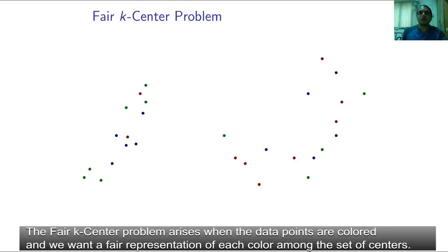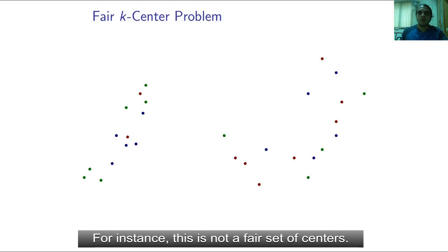The fair k-center problem arises when the data points are colored and we want a fair representation of each color among the set of centers. For instance, this is not a fair set of centers.